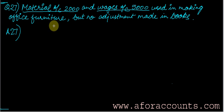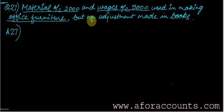Material account ₹2000 and wages account ₹5000 were used in making office furniture, but no adjustment has been made in the books. No adjustment has been made means that the furniture has not been brought into the books, and the material and wages which were actually used are for office furniture. So we need to account for them.